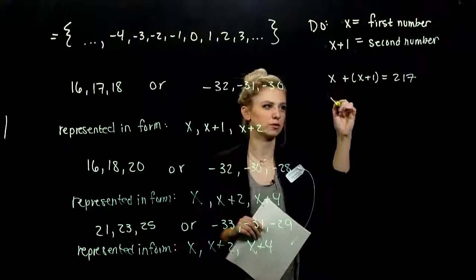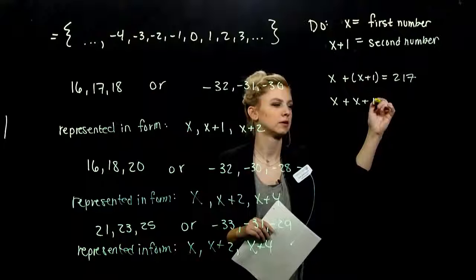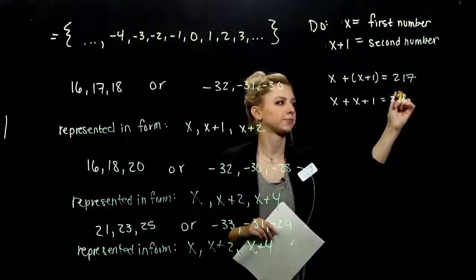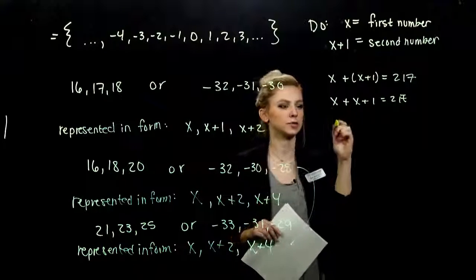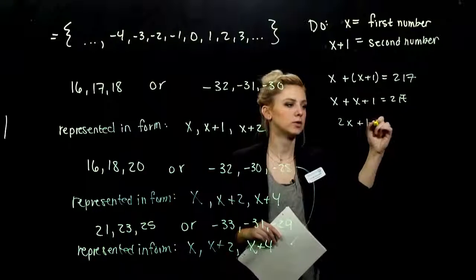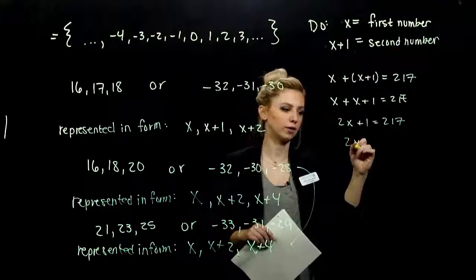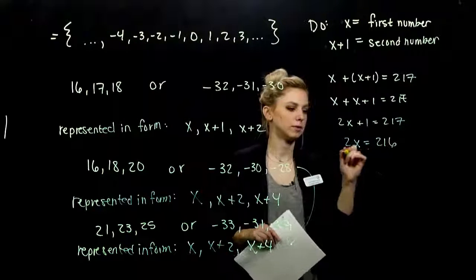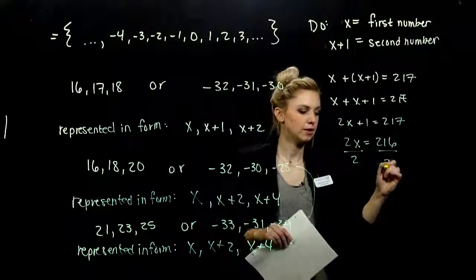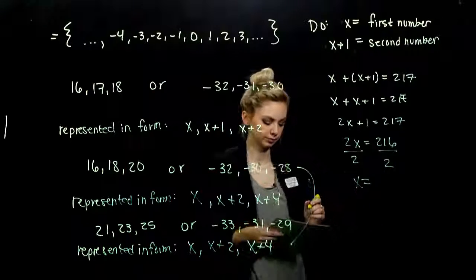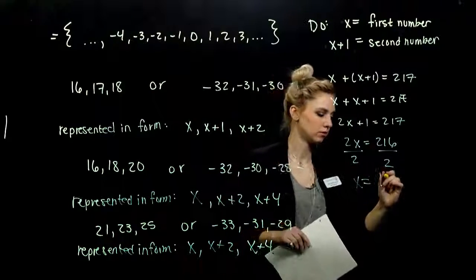Now do the parentheses matter on this part? No, there's a 1 out on the front, so we can drop those parentheses. And combine our like terms. So I have 2x plus 1 is 217. So if I'm solving for x, I need to move the 1 first. Subtract 1 from both sides. Divide by 2. So x is 108.